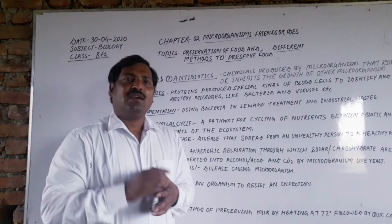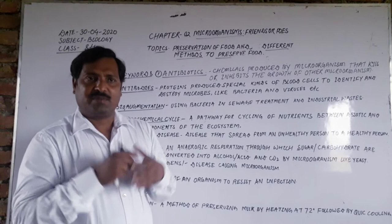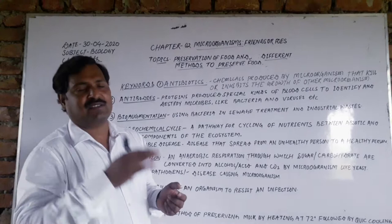The fifth keyword is communicable disease. A communicable disease is one that spreads from an unhealthy person to a healthy person. Examples include cholera, influenza, and tuberculosis. These diseases spread from one person to another.